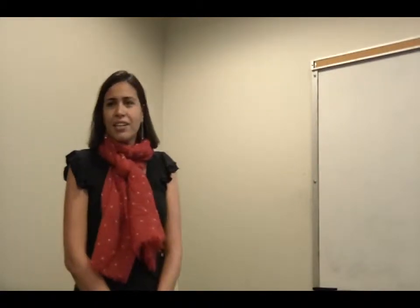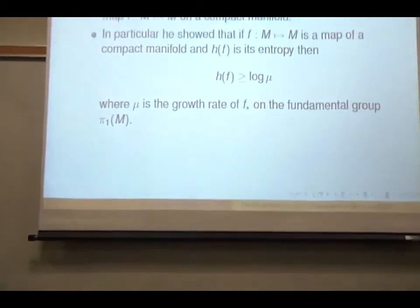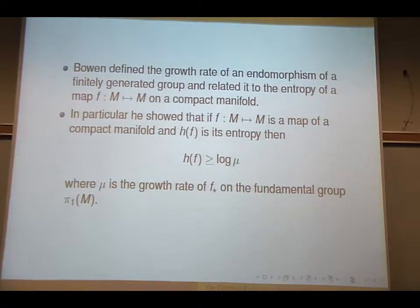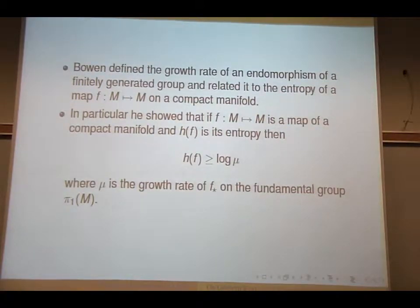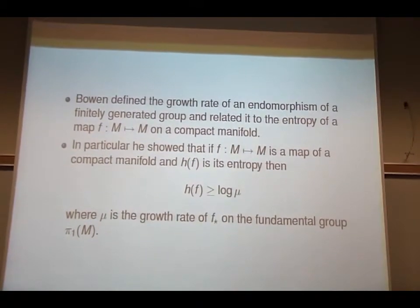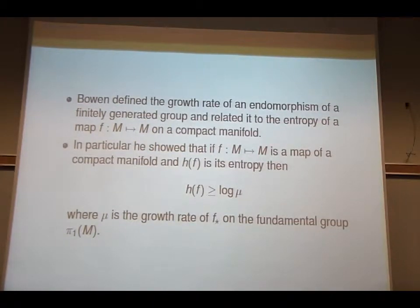So Boyd defined the growth rate of an endomorphism of a finitely generated group and related it to the entropy of a map, F, on a compact manifold. In particular, he showed that if you have F, from M to M is a map of a compact manifold, and H_F is its entropy, then this entropy is always greater than or equal to the log of mu, where mu is a growth rate of F-star on the fundamental group pi-1 of M.